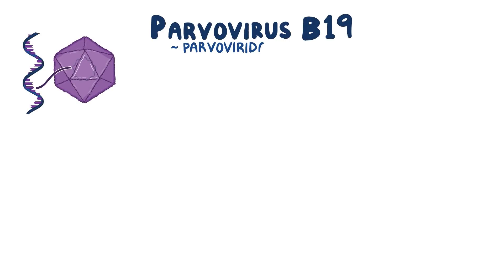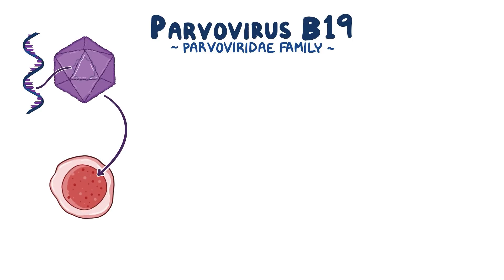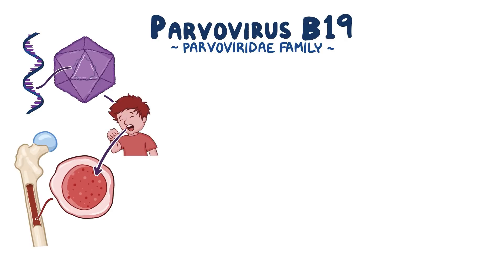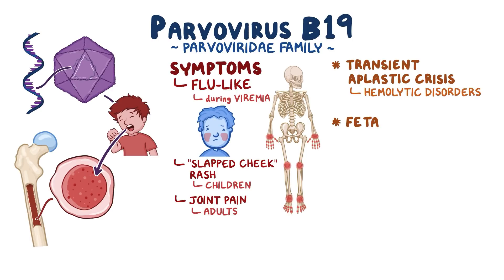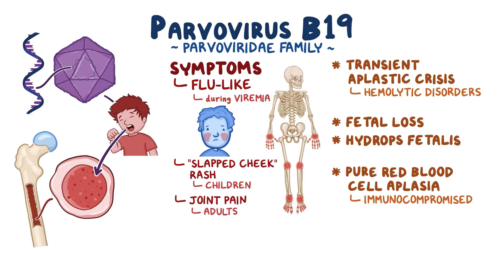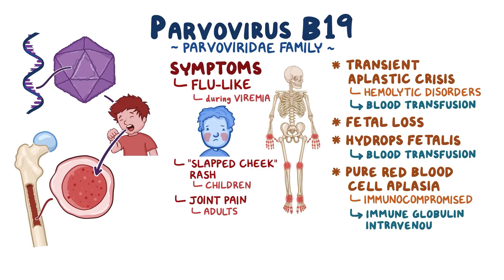As a quick recap: Parvovirus B19 is a single-stranded DNA virus of the parvoviridae family. It infects and replicates in erythroid progenitor cells in the bone marrow. Viral replication results in apoptosis of infected cells. It's transmitted by respiratory droplets. Flu-like symptoms are common during the viremia phase, followed by a slapped-cheek rash and/or joint pain. Children are more likely to show the rash, and adults tend to have the joint pain. Parvovirus B19 can cause transient aplastic crisis in individuals with underlying hemolytic disorders, fetal loss and hydrops fetalis in pregnancy, and pure red blood cell aplasia in immunocompromised individuals. Treatment varies according to the symptoms and can involve blood transfusion for transient aplastic crisis and hydrops fetalis, and IVIG for chronic infections.